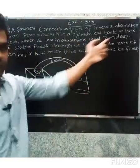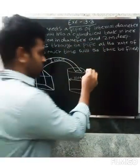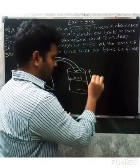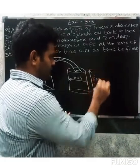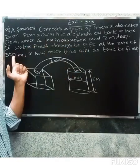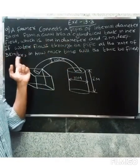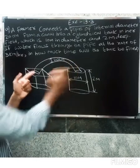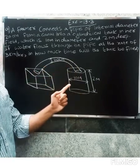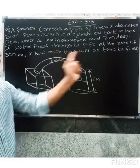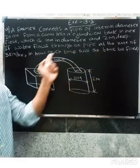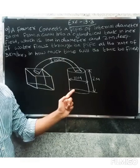The cylindrical tank has a diameter of 10 meters and is 2 meters deep. Water flows through the pipe at the rate of 3 kilometers per hour. The question is: how much time will the tank take to be filled?